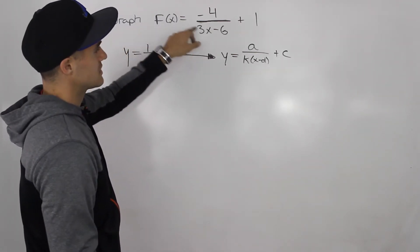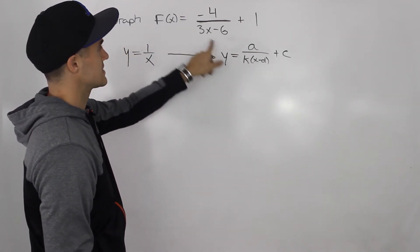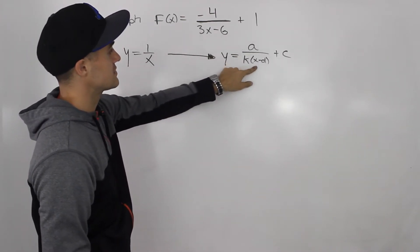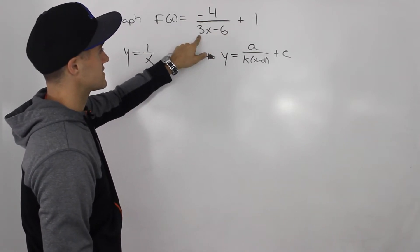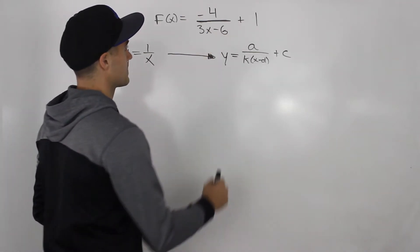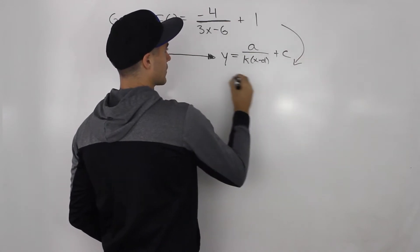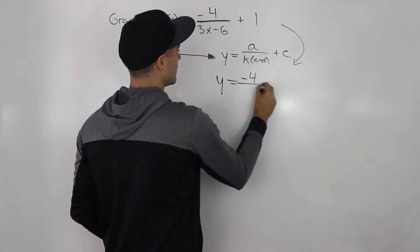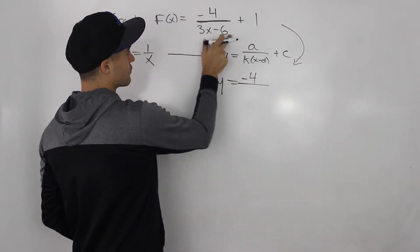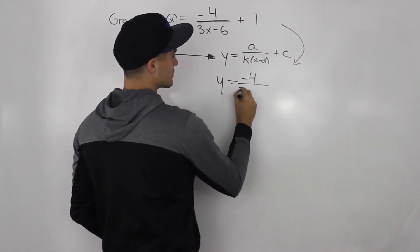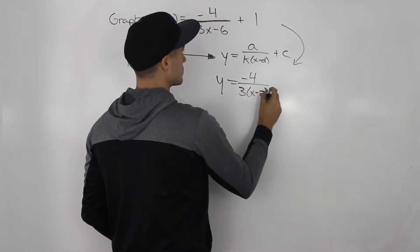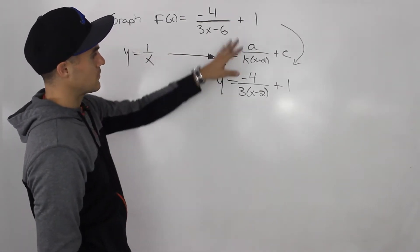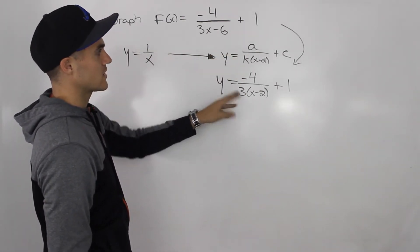Notice how our function is very close to this format, except for the denominator. In this general form there's nothing attached to the x, but our function has a 3 attached to x. So let's rewrite it in that format: we keep the -4 on top, factor out the 3 in the denominator to get x - 2, and keep + 1. Now we can match up all the transformation values.